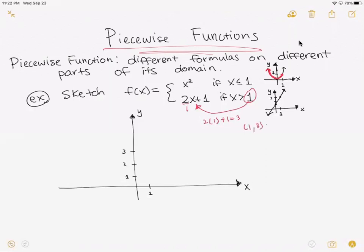...we have a hole there because it says if x is greater than 1. So I'm going to put a hole at (1, 3). But x is strictly greater than 1, so we're including this part of the graph.